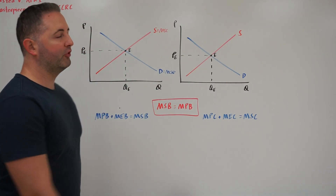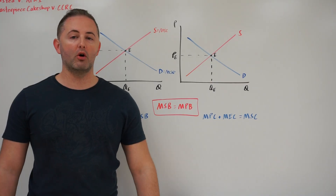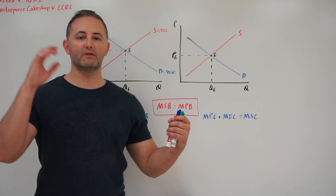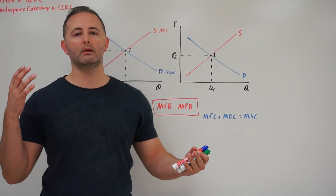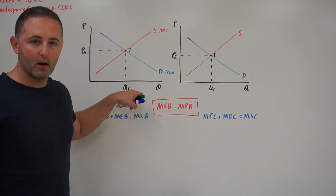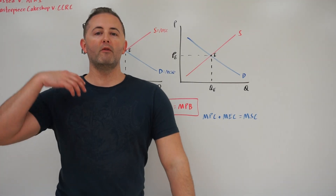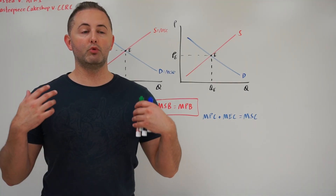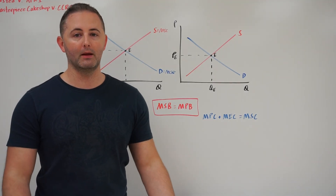So behind me I have two supply and demand models, really basic, exactly what we've done all year long. At this point we know that the intersection of the supply and demand curve, where quantity supplied equals quantity demanded, is our point of equilibrium. We have our equilibrium quantity and our equilibrium price. And to this point we've assumed that when the market is in equilibrium, that is a good thing — that the market is providing something efficiently.